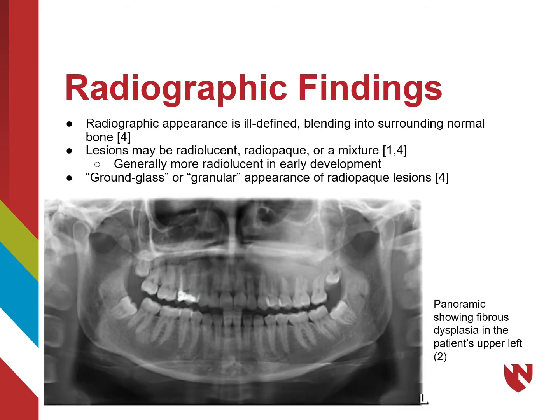A key feature of fibrous dysplasia is that it is ill-defined on radiographs. This essentially means we cannot confidently trace the borders of the lesion, and it has an overall hazy appearance. This feature is especially important because it helps us separate fibrous dysplasia from other fibroosseous lesions such as ossifying fibroma and periapical cementoosseous dysplasia. We also see that fibrous dysplasia often begins as a radiolucent lesion, and over a couple of years the lesion appears mixed and then ultimately as a radio opacity.